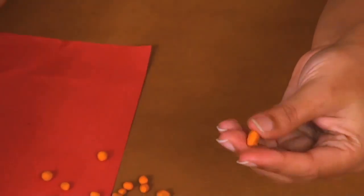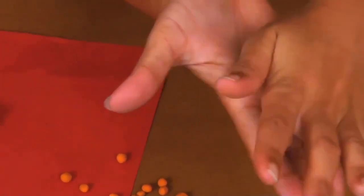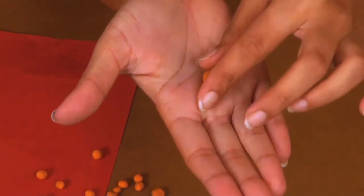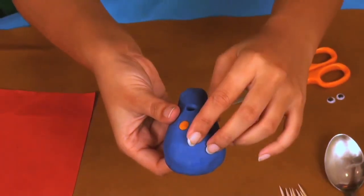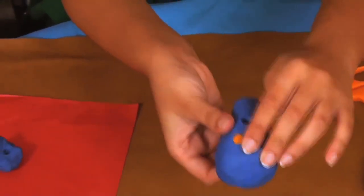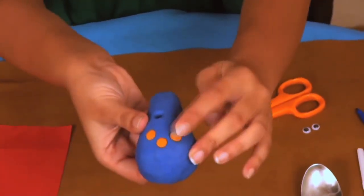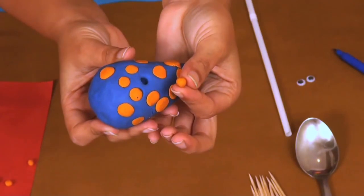Then with some orange dough, make tiny balls and place them into the holes you just made. Press them down firmly. Doesn't it look colorful?